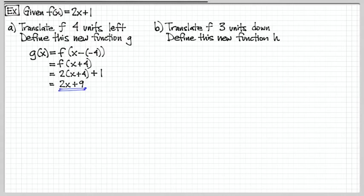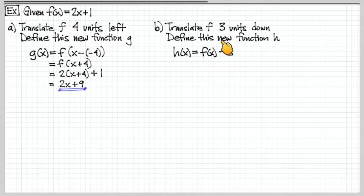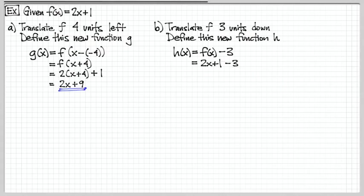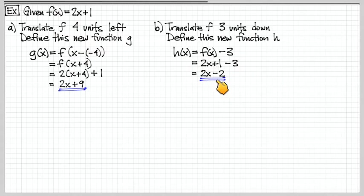Now let's look at an example where we are shifting down. Since it's vertical, we're going to be adding or subtracting to the output of f of x. We're moving 3 units down, so we subtract 3 from f of x. Replacing f of x with 2x plus 1, our new function is 2x plus 1 minus 3, which simplifies to 2x minus 2. So these are our new functions generated from the original one.